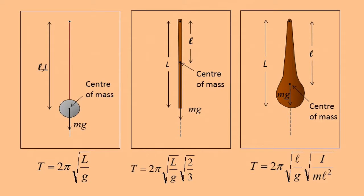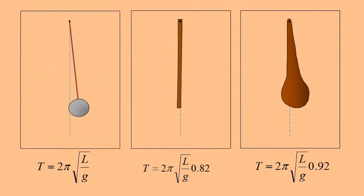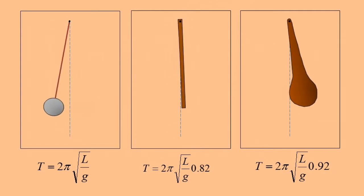For other pendula which have different shapes, the period changes, even though they have the same length. For example, for a bar, the period reduces.